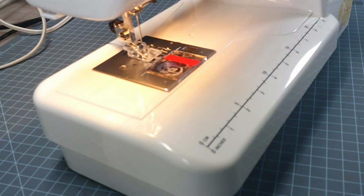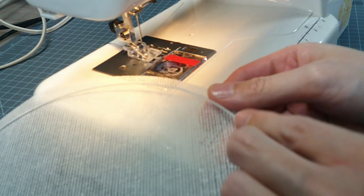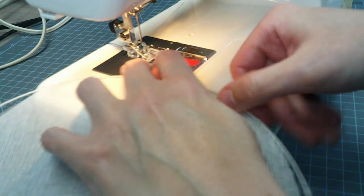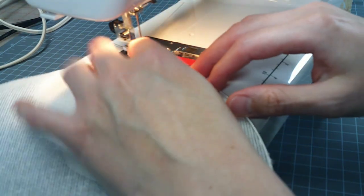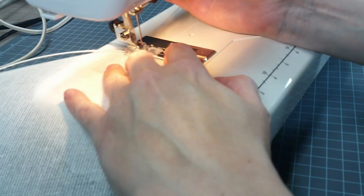Set your machine to a medium-width zigzag at about two to two and a half length, and place the cording foot on the presser shank.